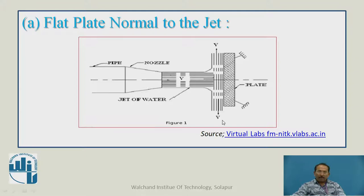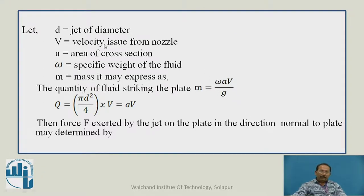Now we will find the expression for this. Let d equal jet diameter, V equals velocity issued from nozzle, a equals area of cross section, ω equals specific weight of the fluid, m equals mass. It may express as m equals ωAV upon g. The quantity of fluid striking the plate is discharge Q equals πd²/4 times V, which equals aV.